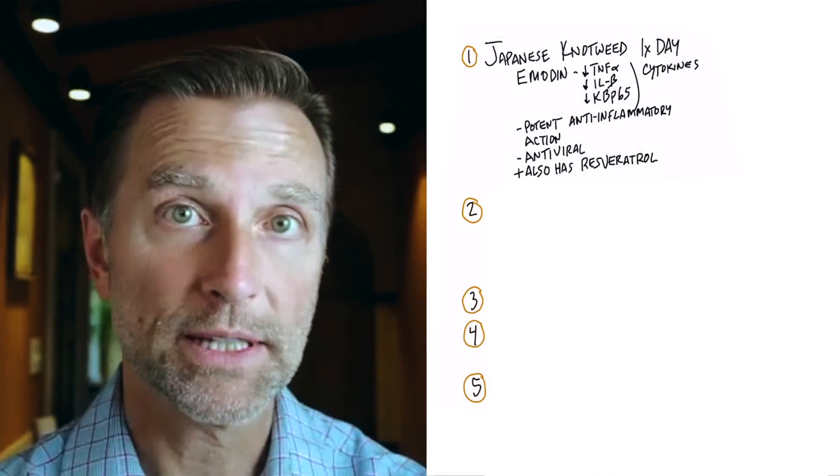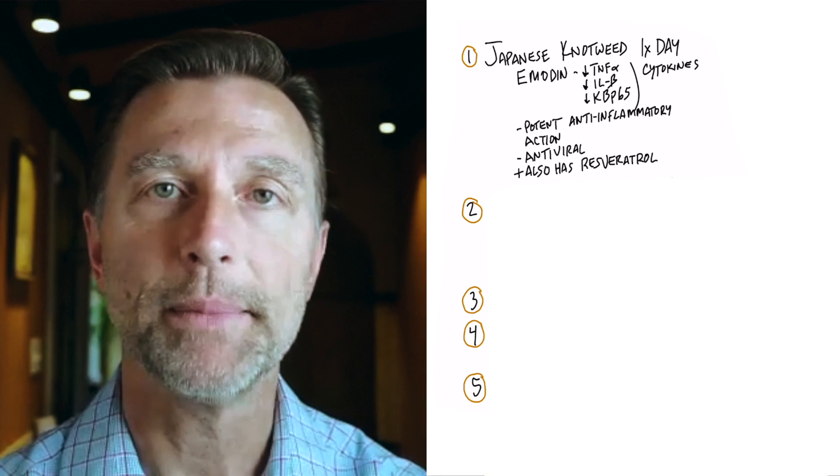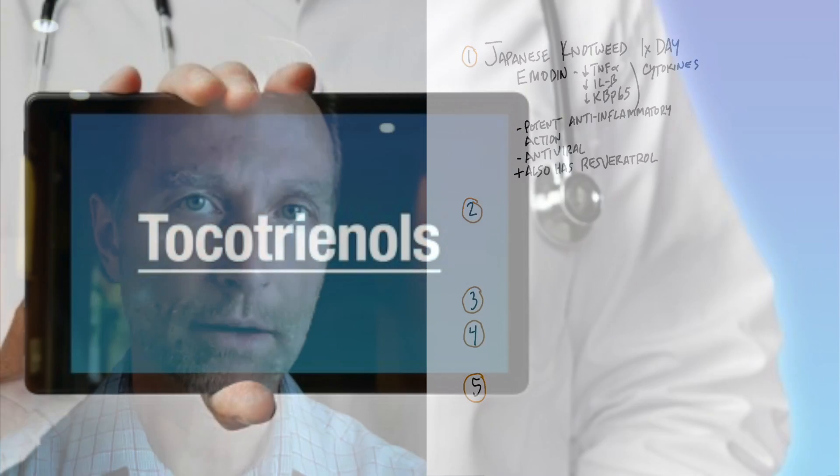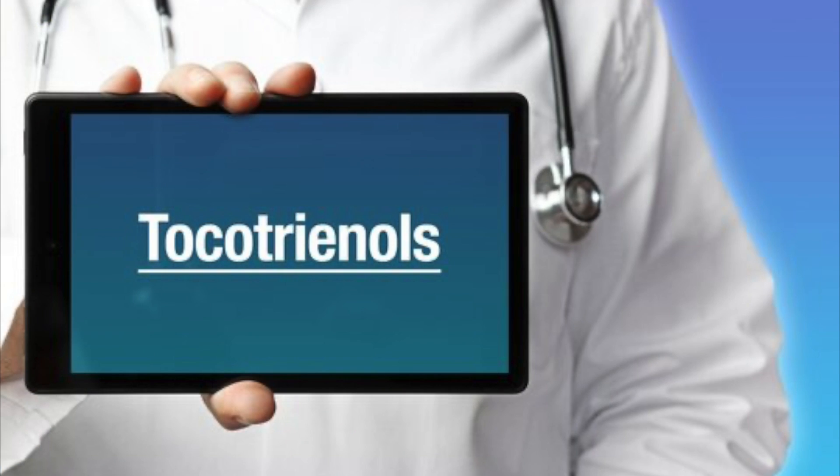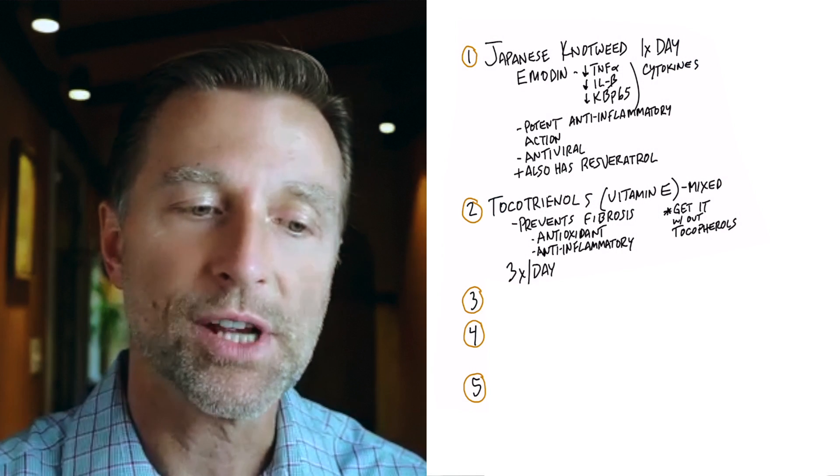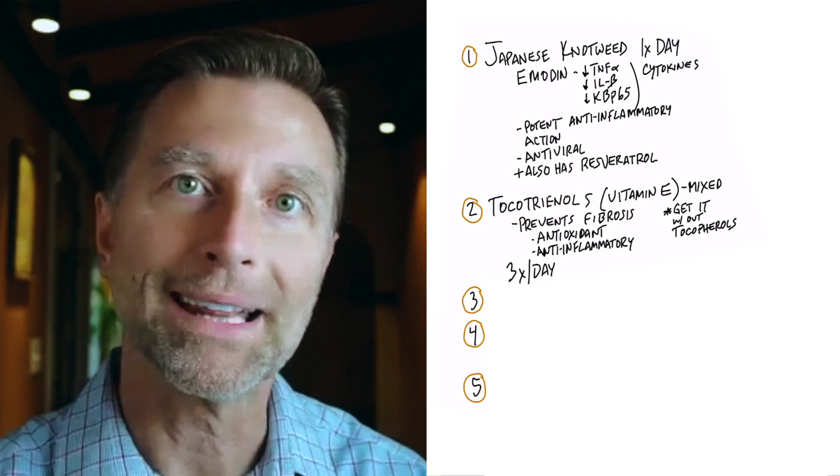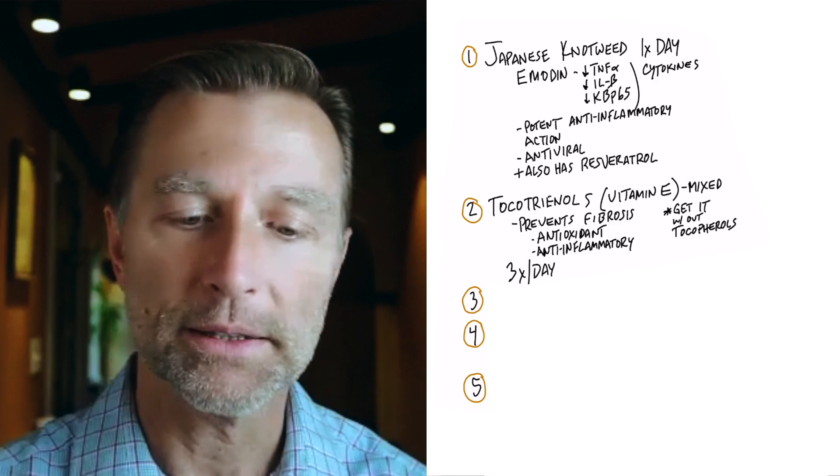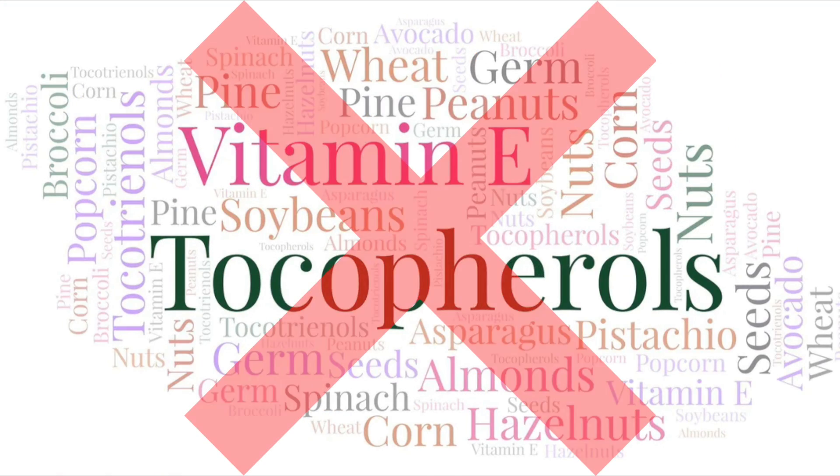Now, the next most important thing to take is a type of vitamin E that is not tocopherol called tocotrienol. And it's not just tocotrienol, it's tocotrienols. There's several different types. So you want to get a blend. There's the alpha, beta, delta, gamma without the tocopherols.